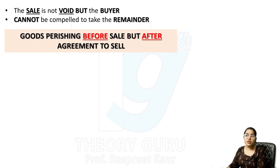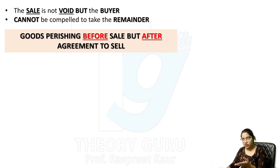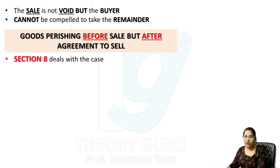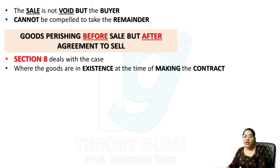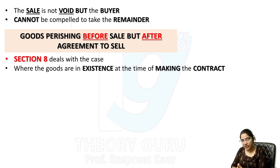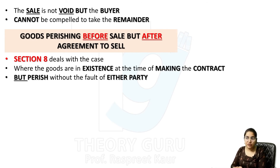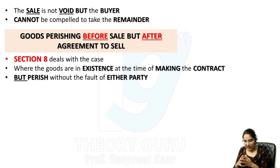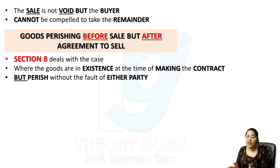Now second case — goods parishing before sale but after agreement to sell. Agreement to sell तो हो चुका है, लेकिन sale से पहले goods खराब हो गई। Section 8 इसके साथ deal करता है। Where the goods are in existence at the time of making the contract, but perish without the fault of either party — दोनों parties की कोई गलती नहीं — और before the risk has passed to the buyer।